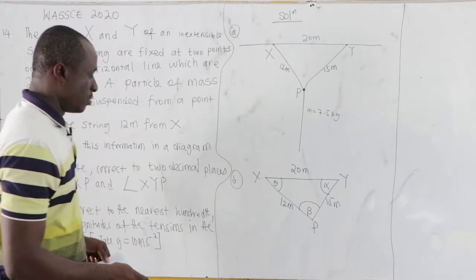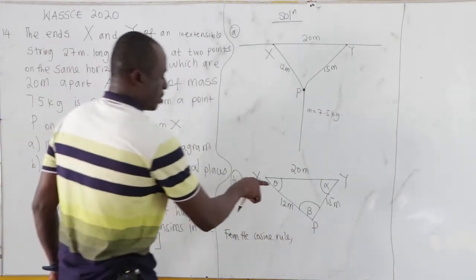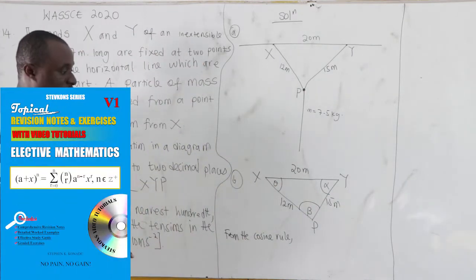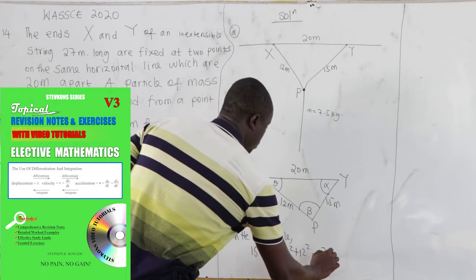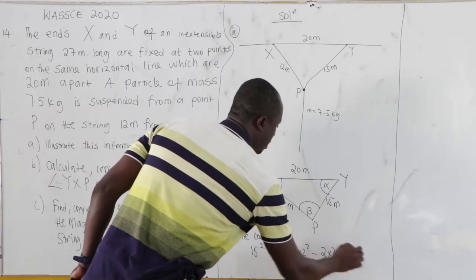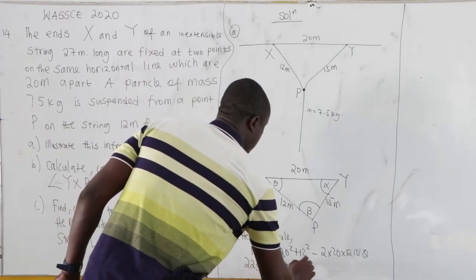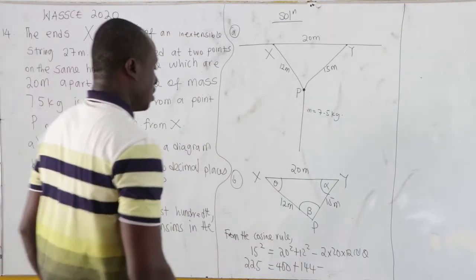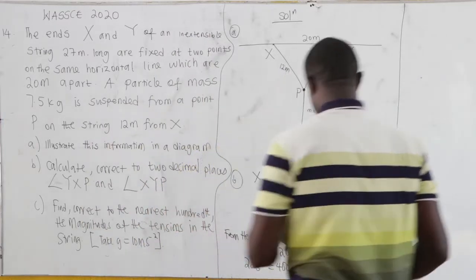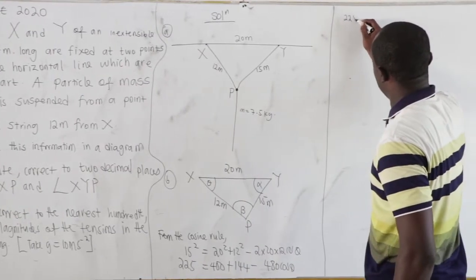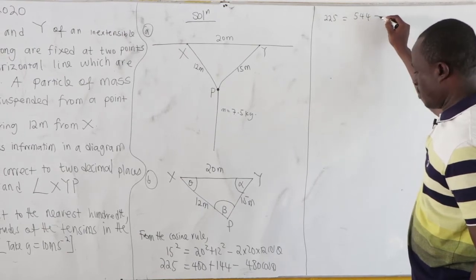Using the cosine rule to find angle theta at X. The side opposite theta is PY = 15 m, so: 15² = 20² + 12² − 2(20)(12)cos θ. That gives 225 = 400 + 144 − 480 cos θ, which simplifies to 225 = 544 − 480 cos θ.